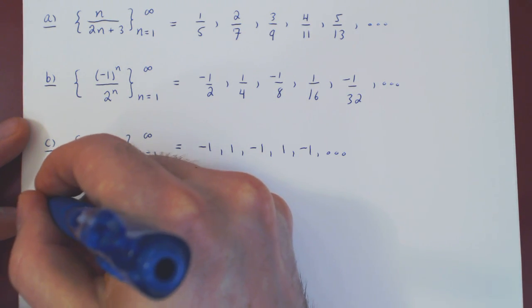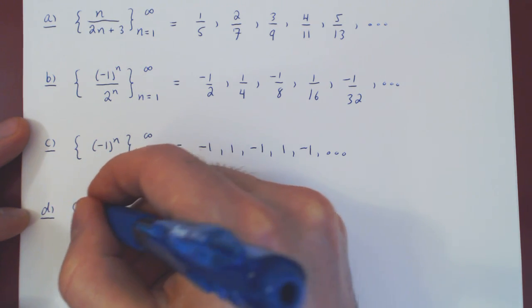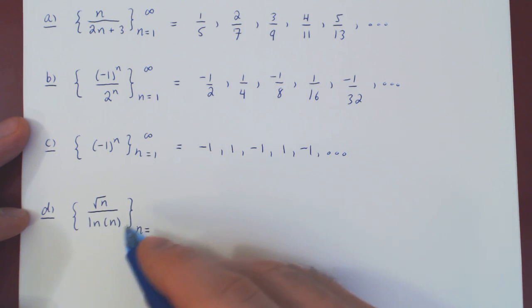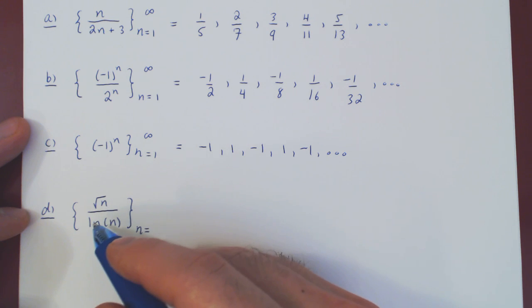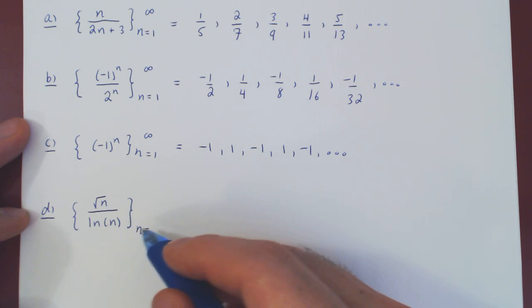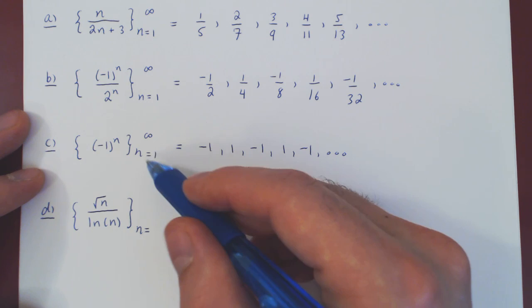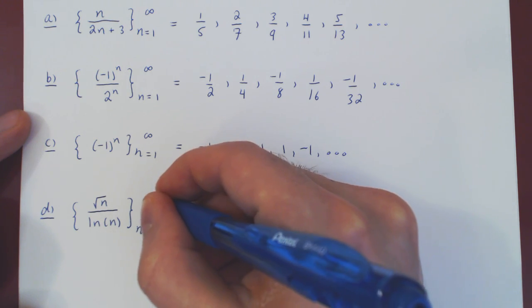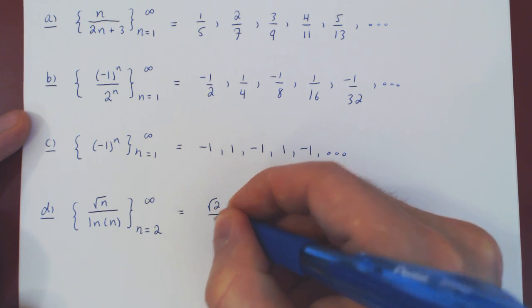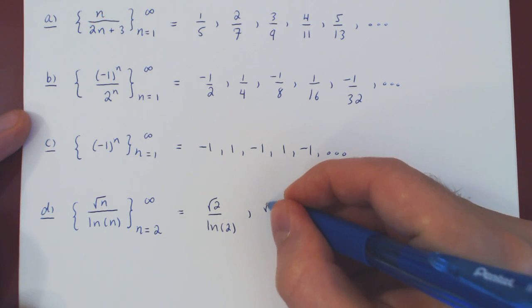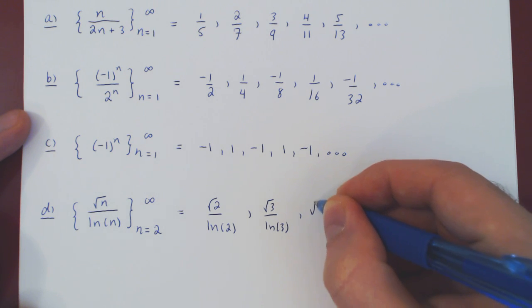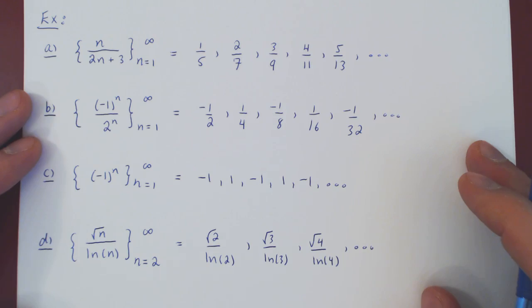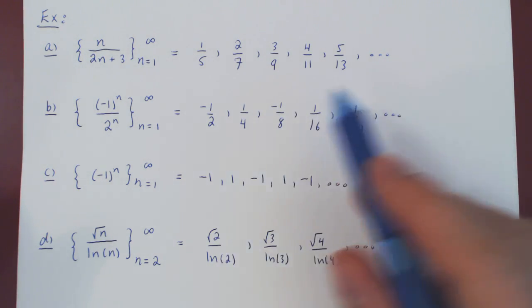Let's look at one last example: the sequence √n / ln(n). Here I will not begin when n=1, but when n=2. If you plug in n=1, you get √1 / ln(1) = 1/0, which does not exist. Note that you can begin your sequence at any point — n=5, n=30 — it's completely up to you. So we begin at n=2 to infinity: the first term is √2 / ln(2), then √3 / ln(3), then √4 / ln(4), and so forth — another infinite list of real numbers.